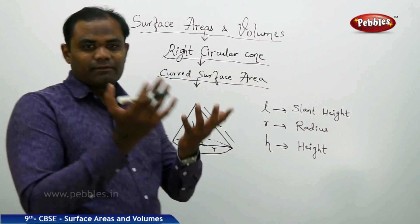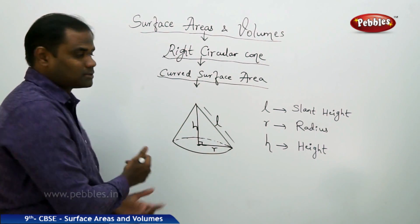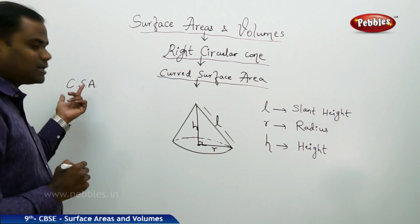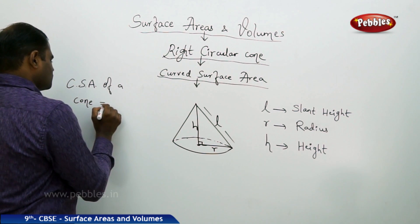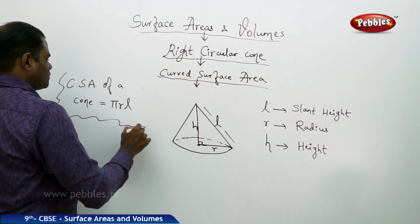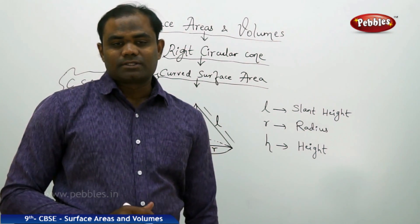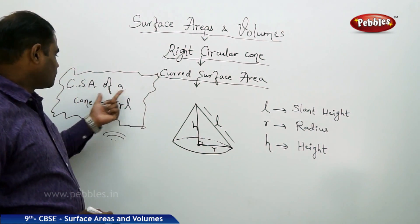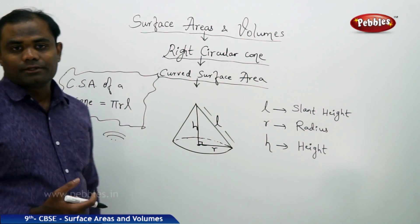The slant height, radius, and height are the three important things which define the curved surface area. The curved surface area is the curved region of the cone — exactly the curved part but not the base. The curved surface area (CSA) of a cone is π R L, where R is the radius, L is the slant height, and π is approximately 3.14. So CSA of a right circular cone is πRL square units.